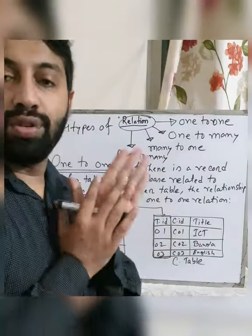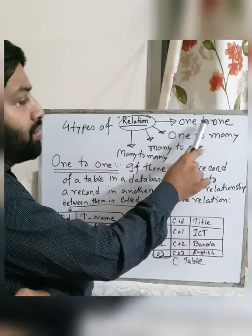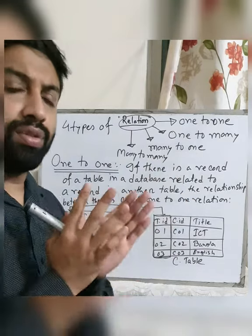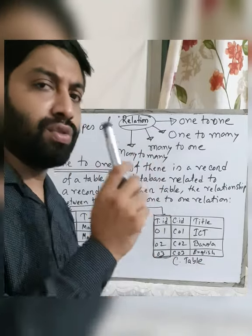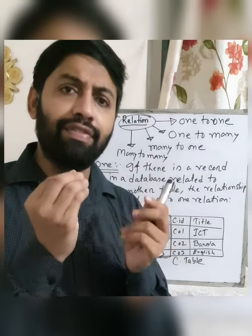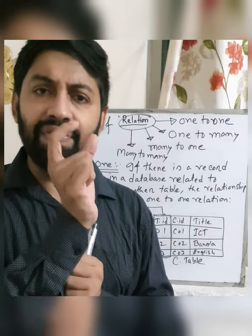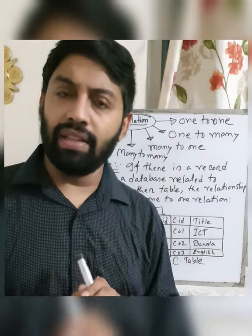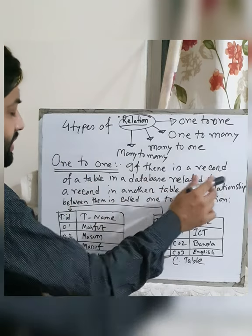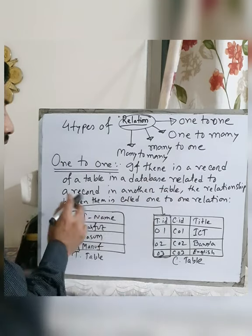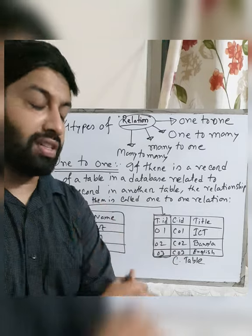We have four types of relationships in a database: one-to-one, one-to-many, many-to-one, and many-to-many. For one-to-one: if in two database tables we find one key field that matches between the two tables, we call it one-to-one. If a record of one table is related to exactly one record in another table, the relationship is called a one-to-one relationship.